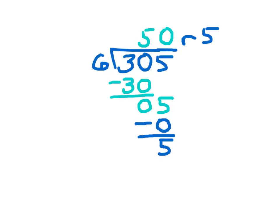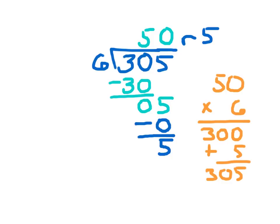Again, I could check this problem here. Inverse operation of division is multiplication, where I multiply 50 times that 6 there. 6 times 0 is 0. 6 times 5 is 30. And I add back in that remainder, 305. The parts of my division problem again, this is the quotient. What I'm dividing is called the dividend. And what I'm dividing by is that divisor.